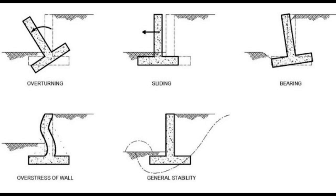The basic failure modes are: overturning, sliding failure, bearing check, overstress, and general stability. Overturning occurs when the wall bends or topples over due to excessive outward force. Sliding failure occurs when the wall moves horizontally, often due to the non-cohesive nature of the soil. Bearing check examines if the soil under the wall can support its weight. Over-stress refers to excessive bending or shearing forces on the wall, and general stability covers overall stability including slope failure and base stability.